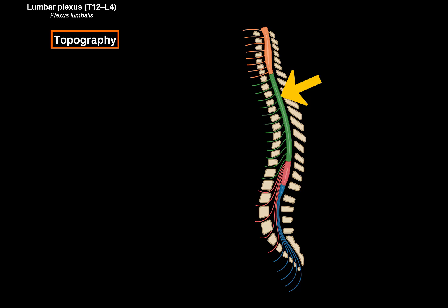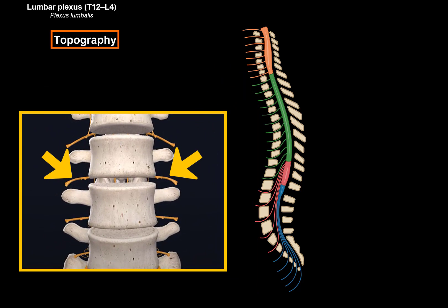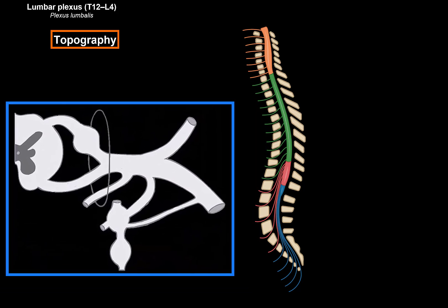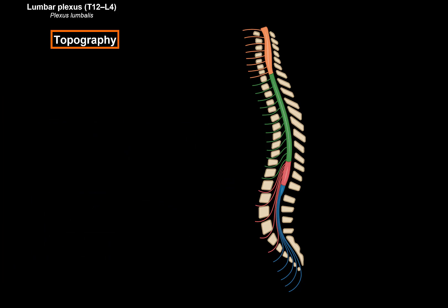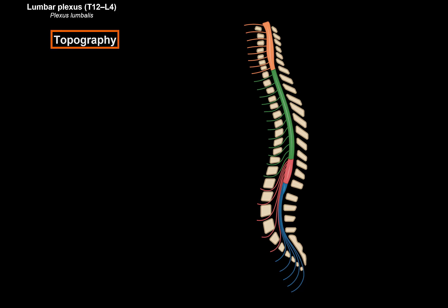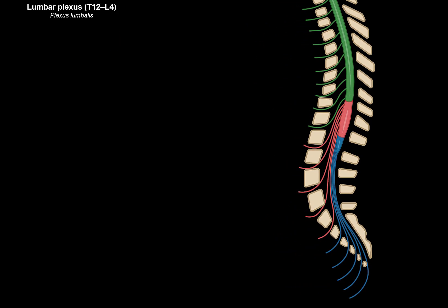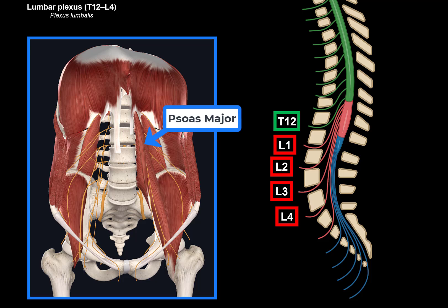Here we see the spinal cord within the vertebral canal, and the spinal nerves leaving the intervertebral foramen — one on each side. We're actually talking about the anterior branch of the spinal nerve, because the anterior branch is what forms all the plexuses. The lumbar plexus is formed from the anterior branches of spinal nerves L1, L2, L3, L4, and a contributing branch from T12. It is located within the psoas major, lateral to the lumbar vertebrae.